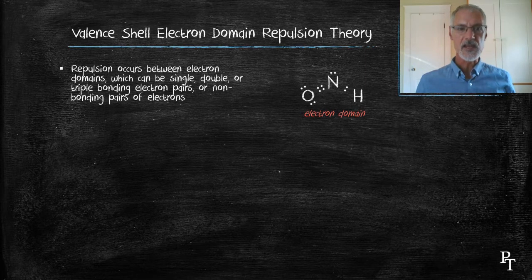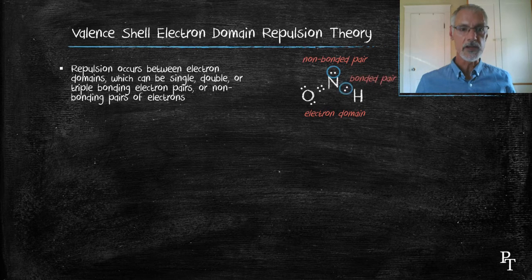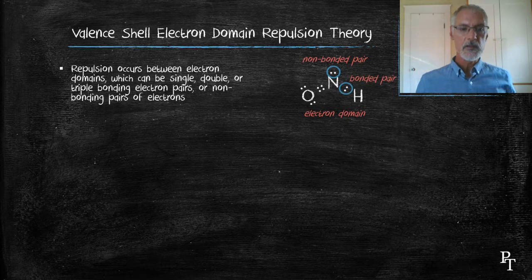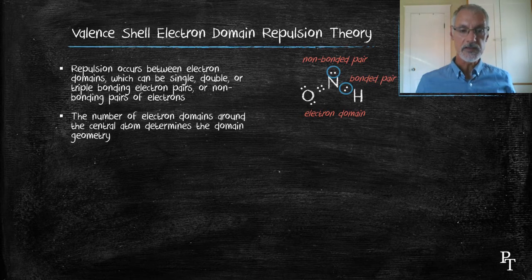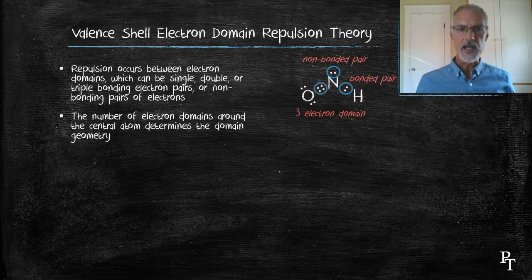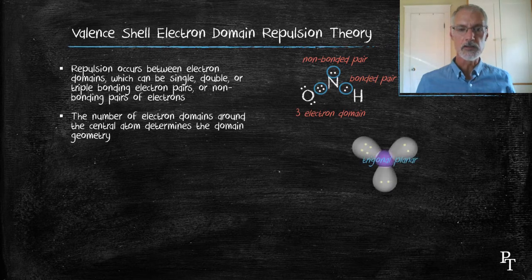Those domains come in a variety of forms. You can have non-bonded pairs, bonded pairs, multiple pairs, single pairs. What determines the initial geometry of my molecule is the number of these regions. In this particular case, there are three electron domains. That means the initial geometry of my molecule is going to begin as what we call a flat triangle or trigonal planar.